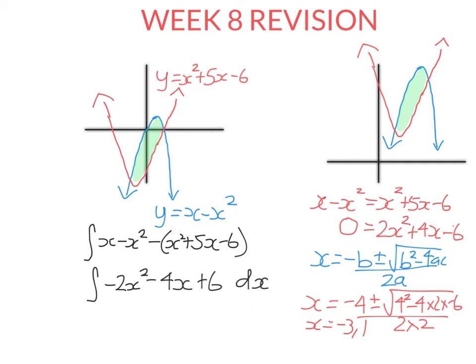So our integral, where we're finding the area between the two curves, is going to be between -3 and 1. Remember, we always put the smaller number on the bottom. Now we're going to go ahead and anti-differentiate this and evaluate it at these two points.